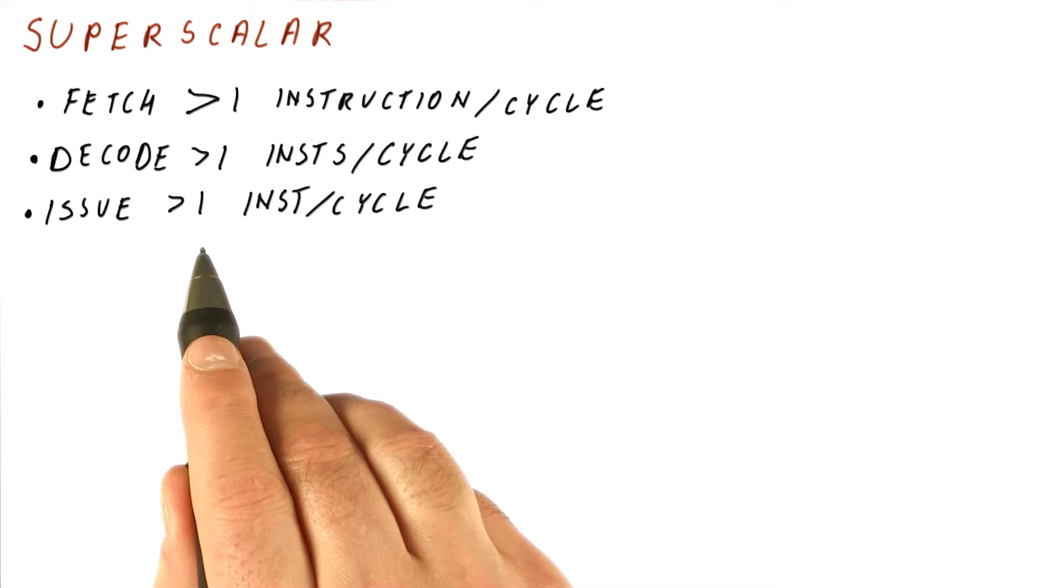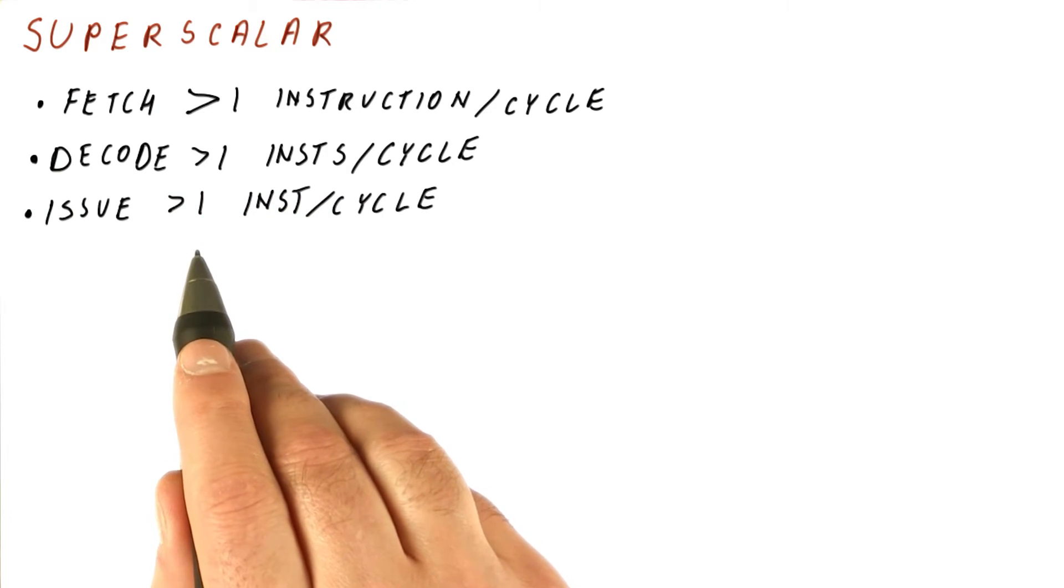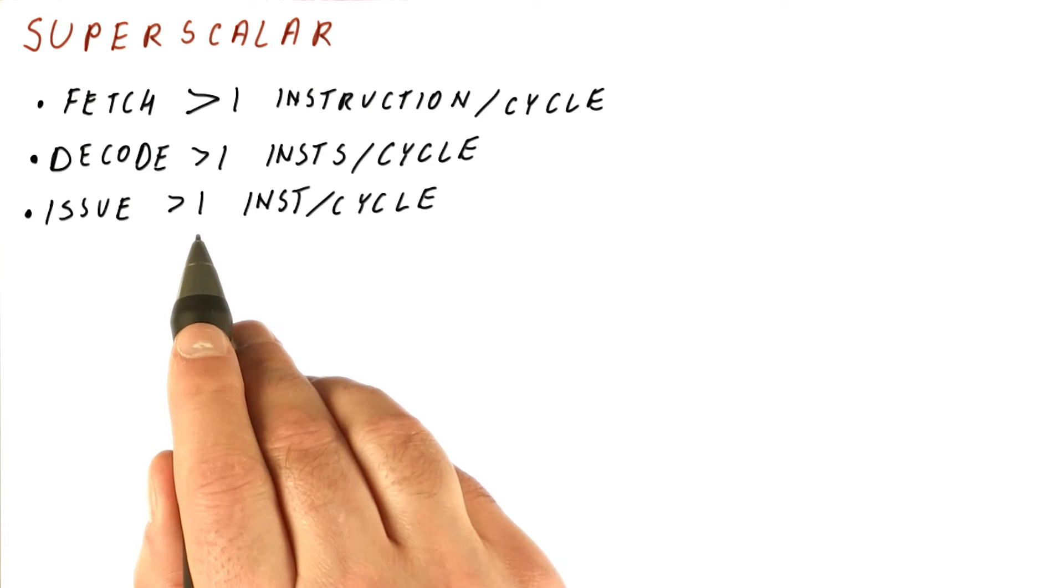Next, we have to issue more than one instruction per cycle. Remember that we need to issue instructions in order. So every cycle, we will consider the next instruction that should issue for issuing. And if it can issue, we will also consider the next instruction. And if that one can issue, we will consider the next one and so on.